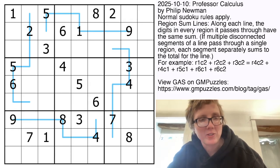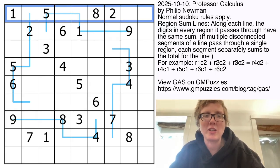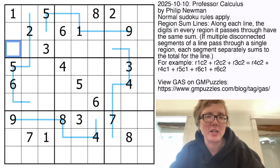This is a region-sum-line Sudoku. So we have normal Sudoku rules, meaning we're placing the digits 1 through 9 once each in each row, each column, and each outlined 3x3 region.